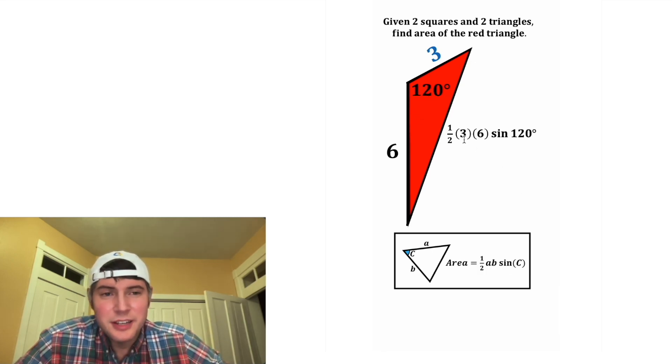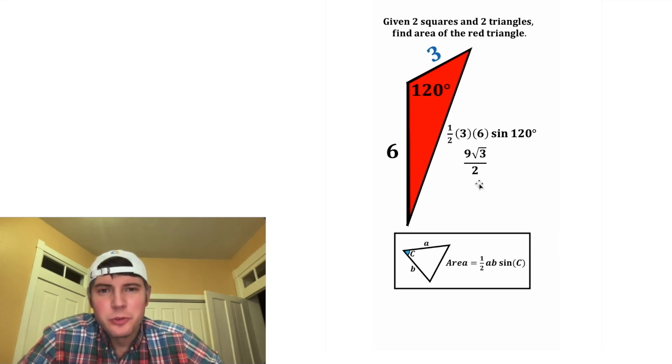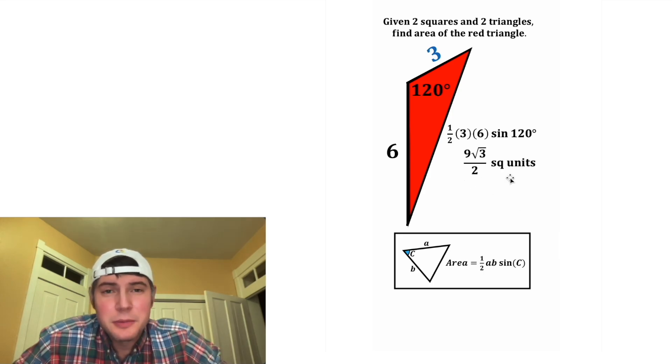Six times three is 18, and half of that is nine. And the sine of 120 degrees is root three over two. So we end up with an area of nine root three over two square units. And that's approximately equal to 7.79 square units.